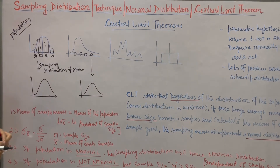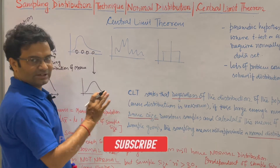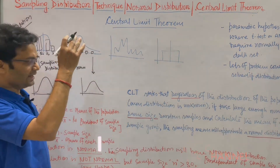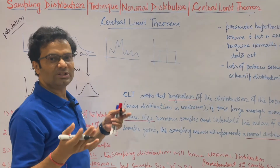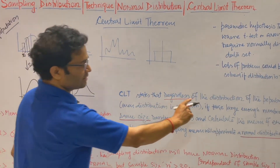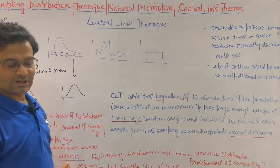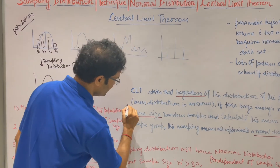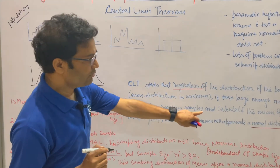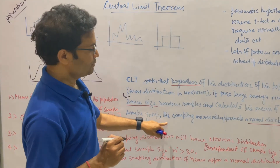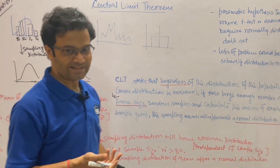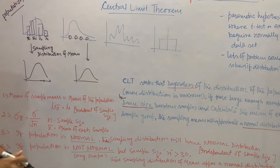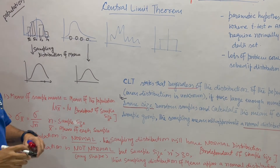The central limit theorem states that regardless of the distribution of the population — your population distribution could be anything, even unknown — if you take a large enough number of same-size random samples and calculate the mean of each sample group, your sampling mean will appear like a normal distribution. This is the magic. If your data is in any form or any distribution, take the sampling and your data becomes a normal distribution. This is a very useful theorem in statistics.